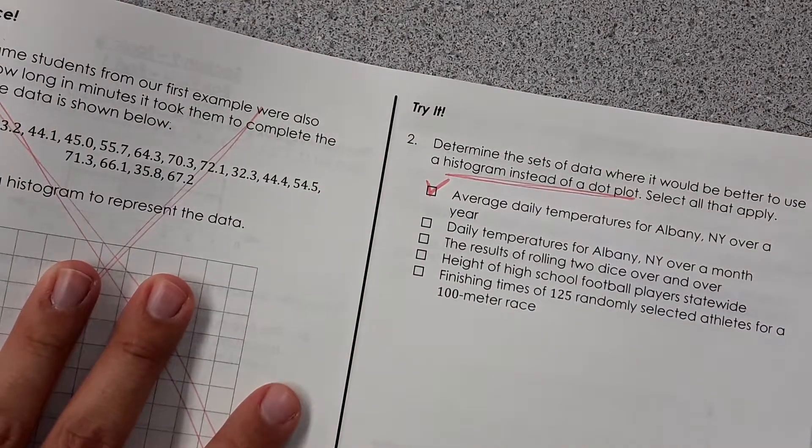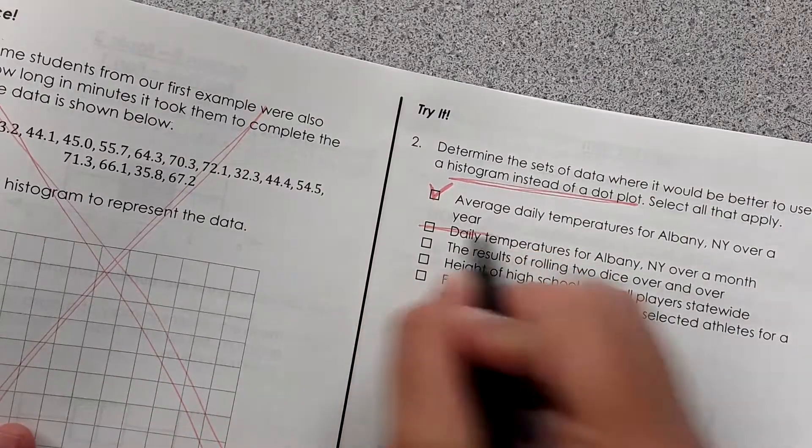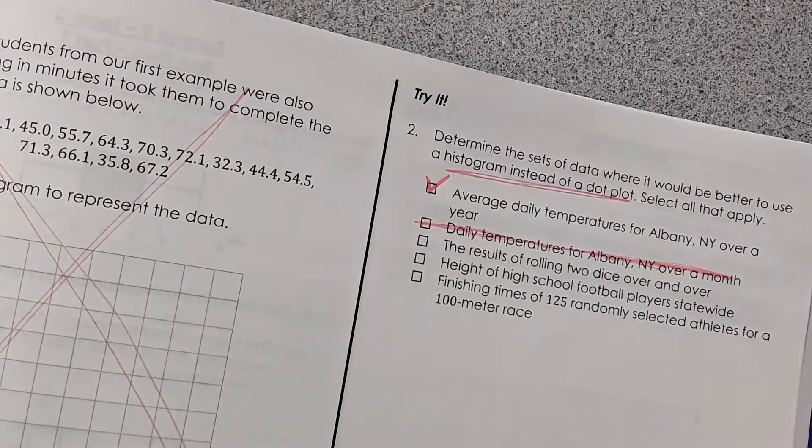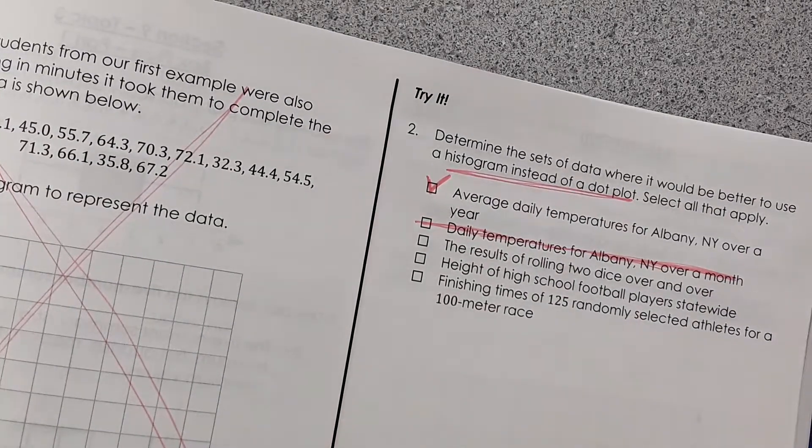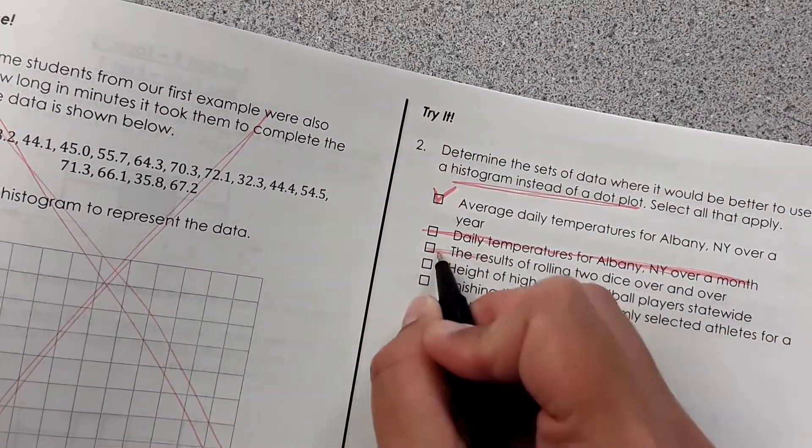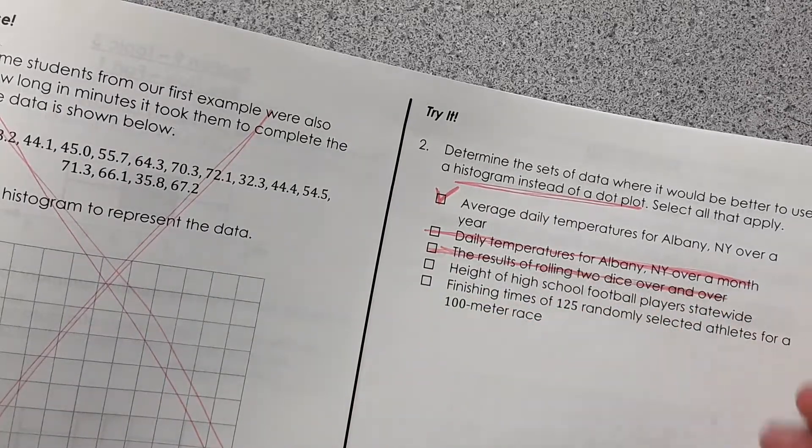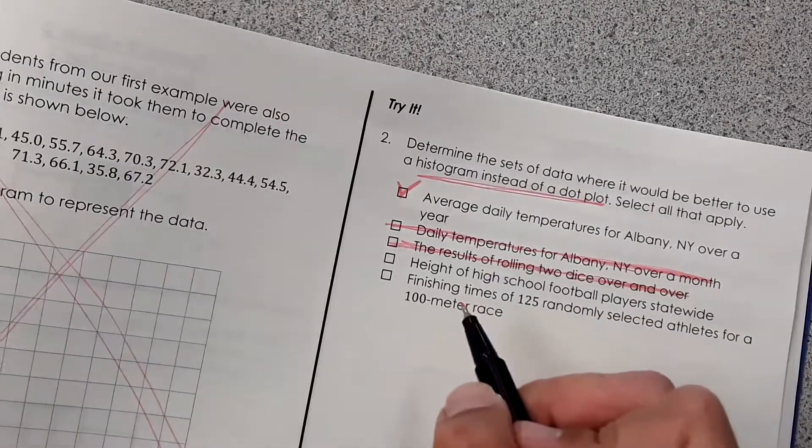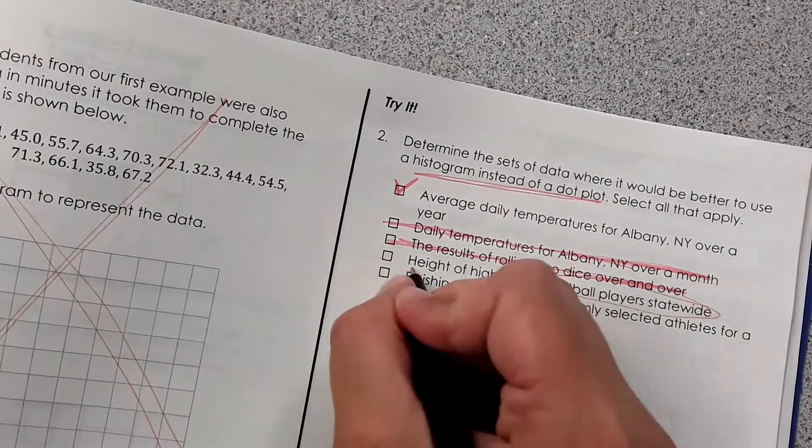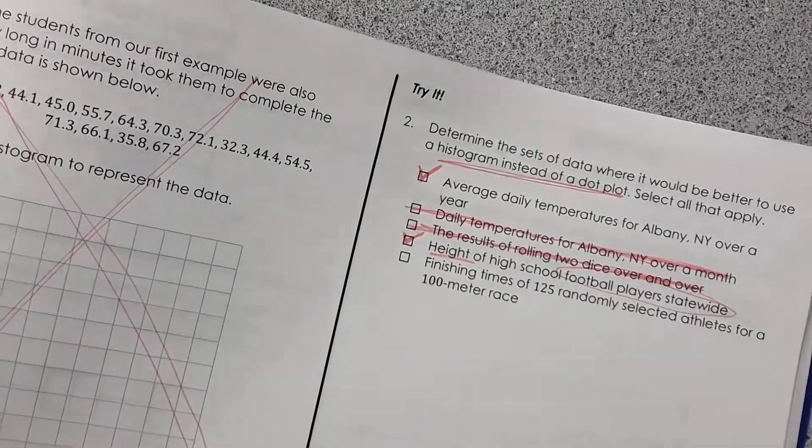Daily temperatures for Albany, New York over a month. That's a smaller set of data. So that would be better on a line plot. And the results of rolling two dice over and over. For that you would always get a whole number and it would only be from two to twelve. So that would be better on a line plot. Then height of high school football players statewide. First of all statewide, that's a lot of football players and height is continuous. It can be fractional amounts and stuff. So that would be better on a histogram.